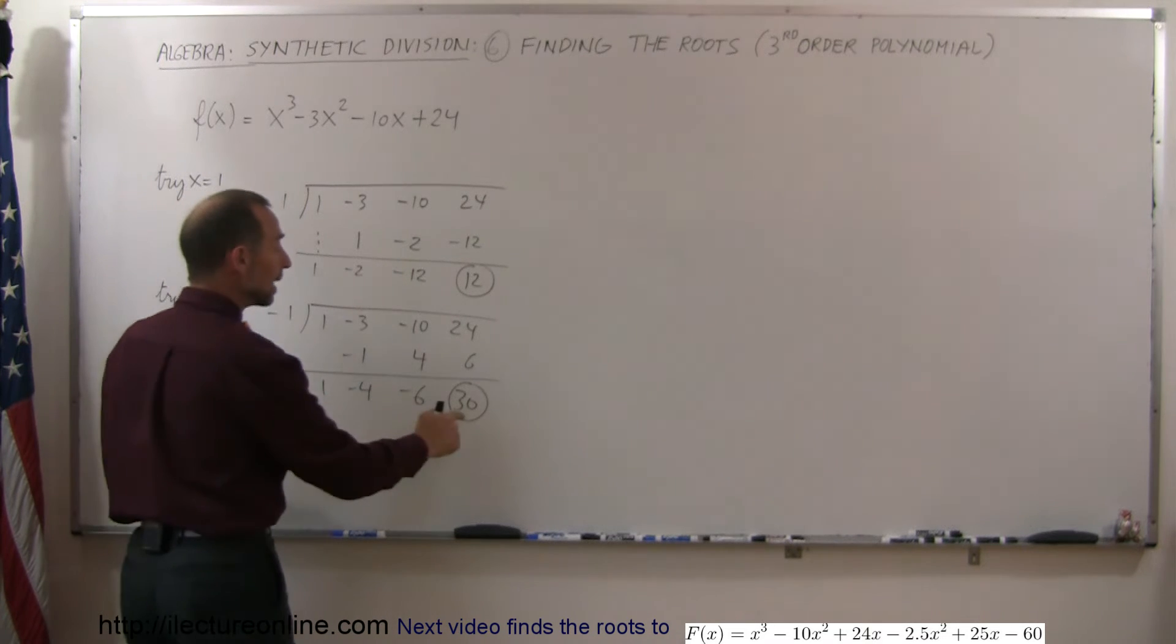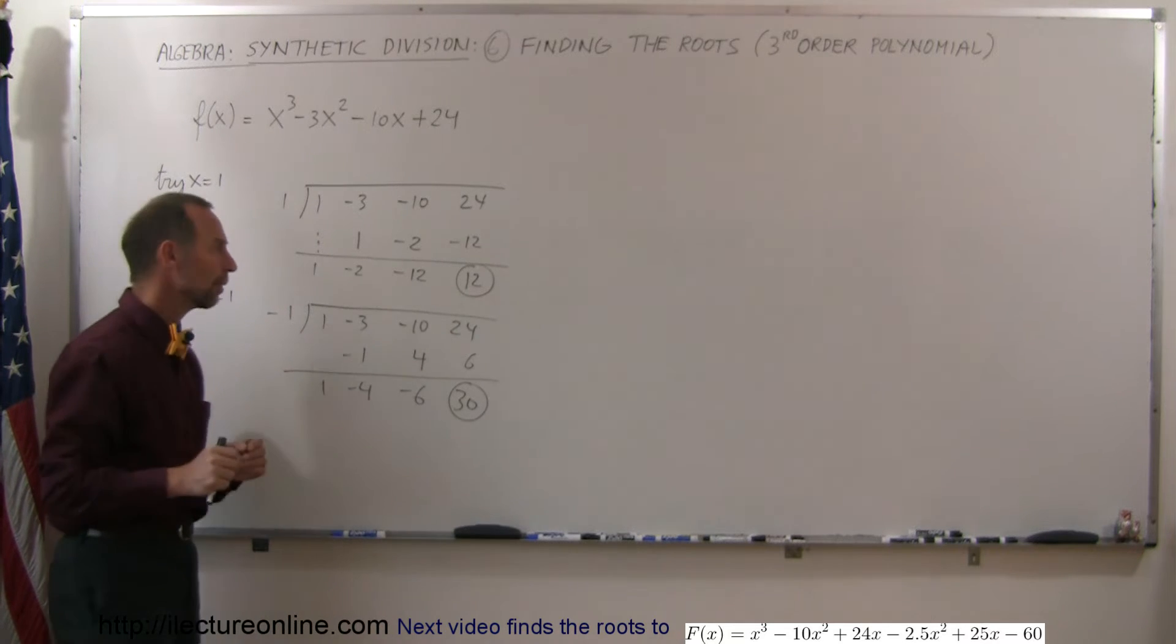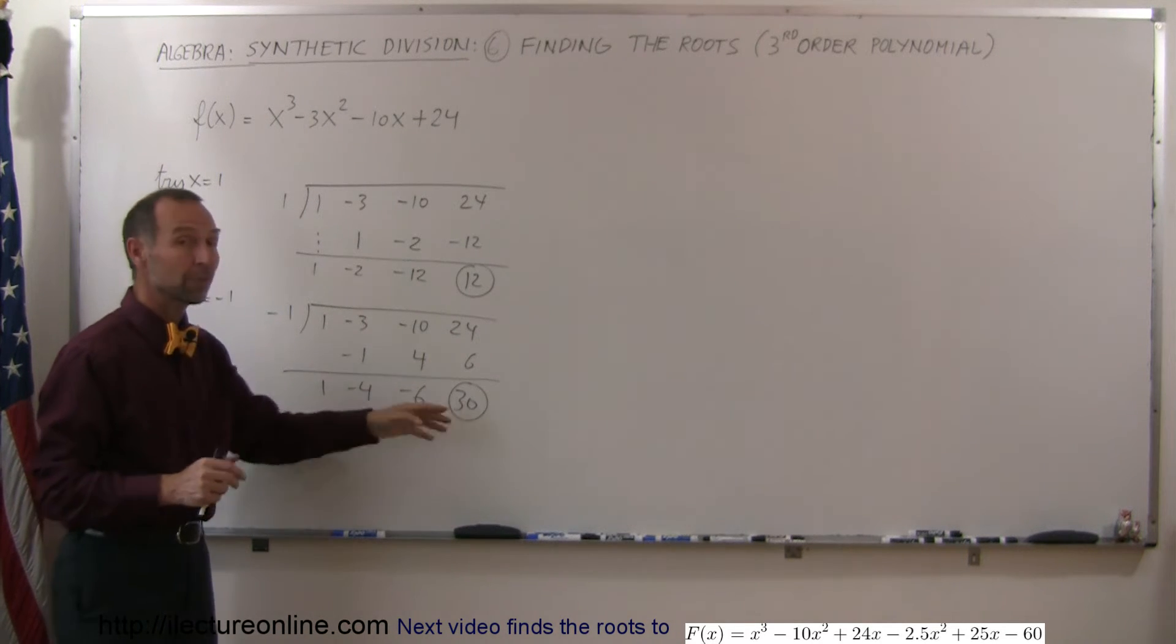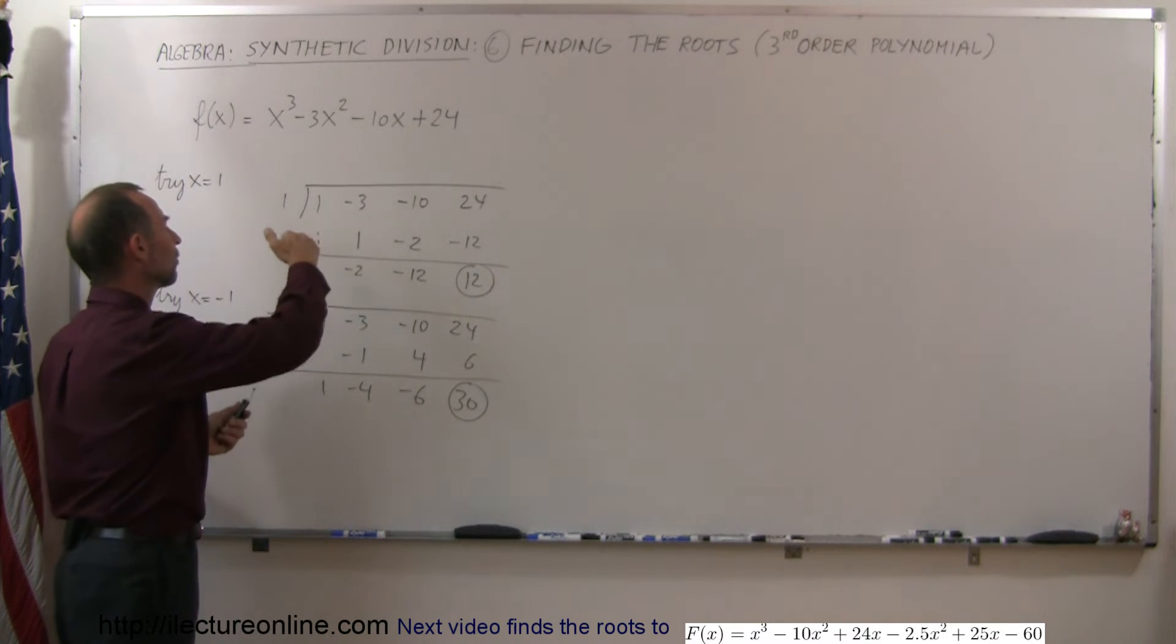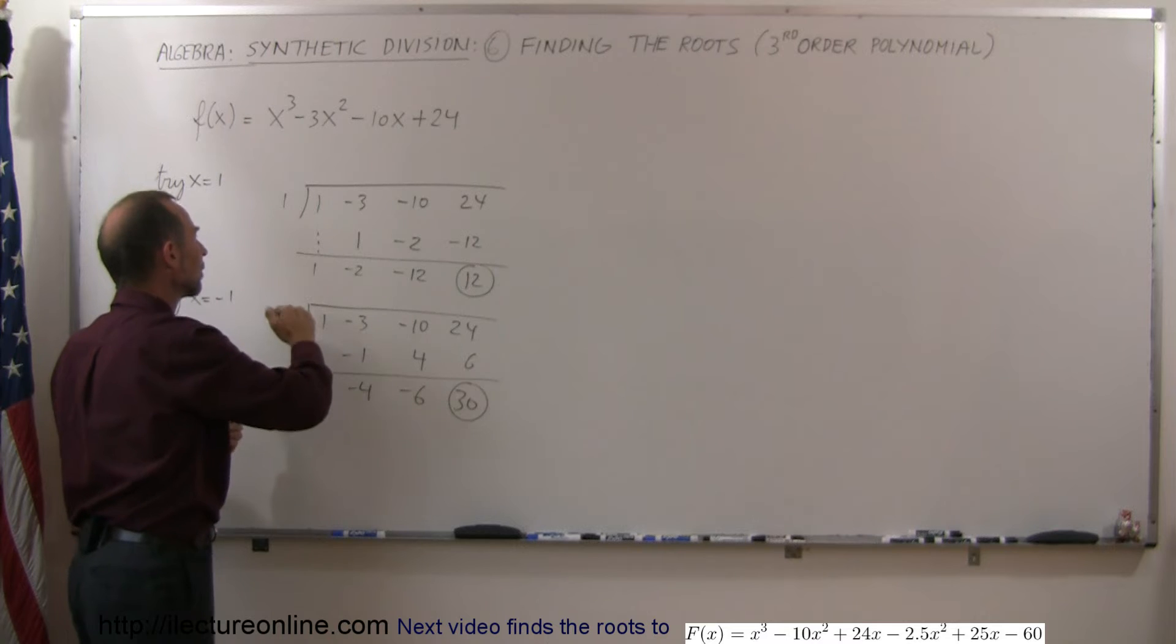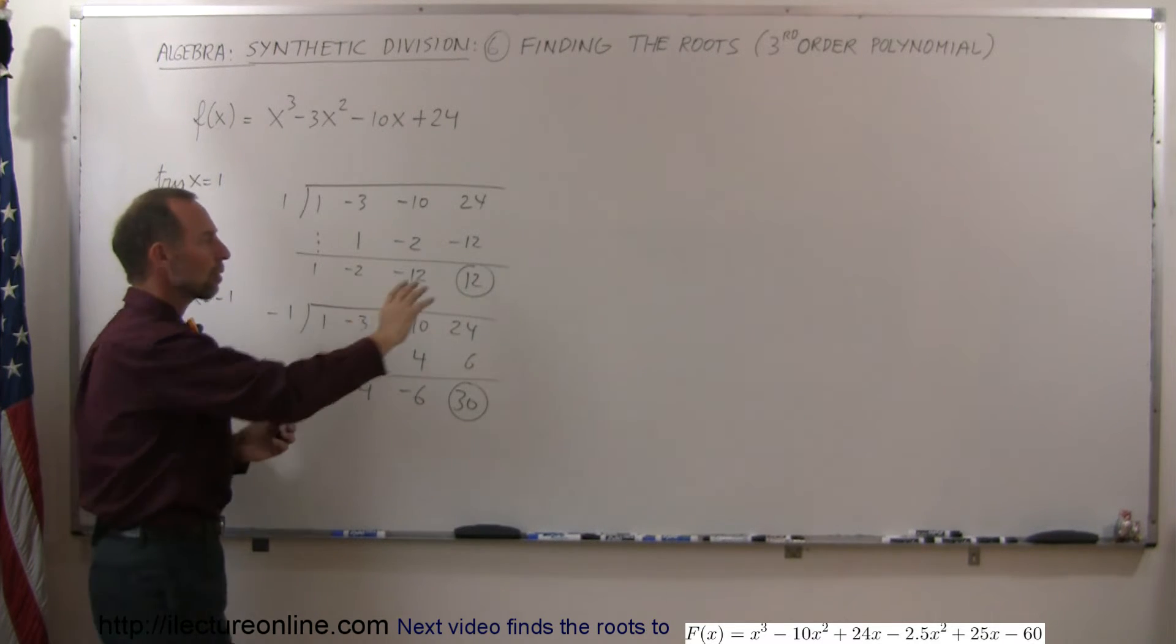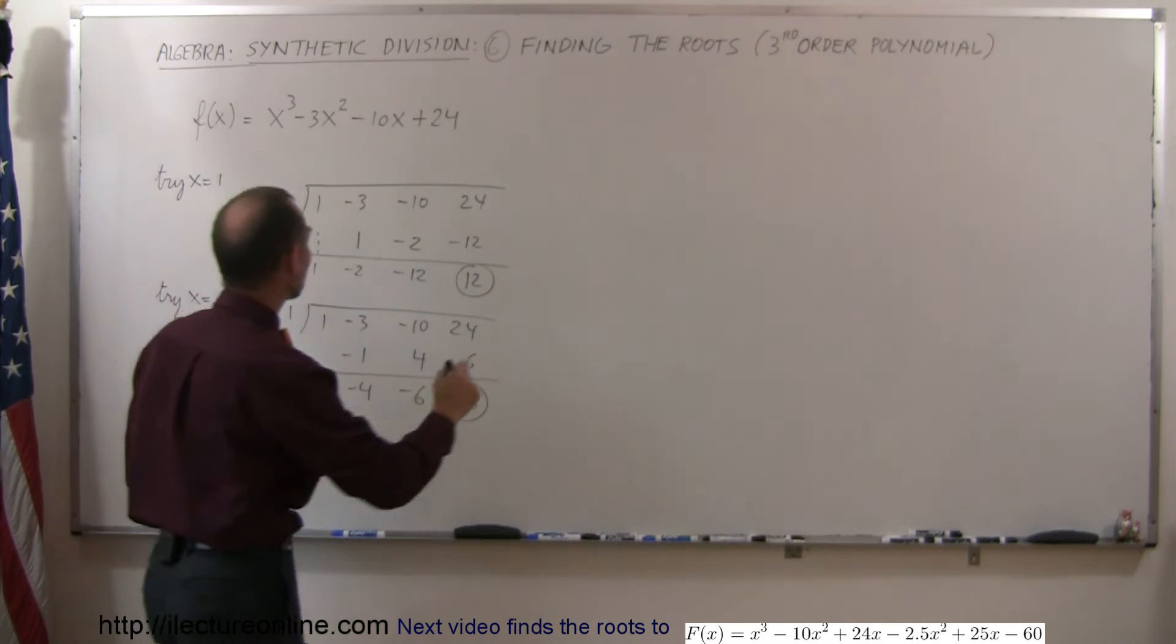But notice that the remainder here is larger than it was over here. Remember, I went from a positive 1 to a negative 1 and my remainder became bigger. So what I'm going to do now is go in the other direction. Instead of going from 1 to 0 to negative 1, I'm going to now go from 1 to a 2 because I think I need to go in the other direction to try and make this number become smaller.